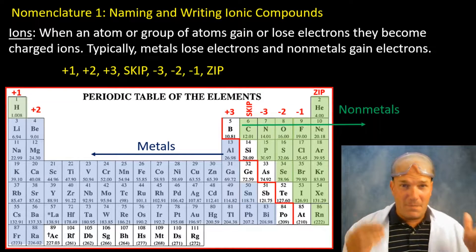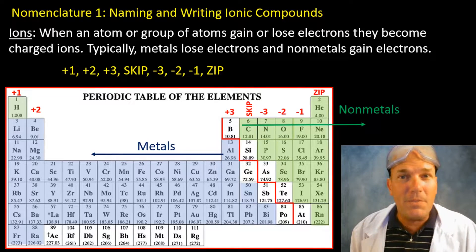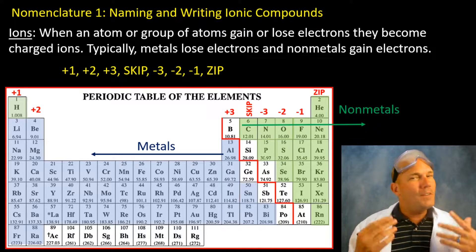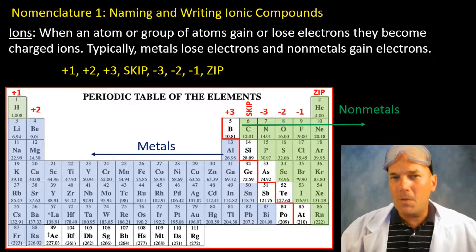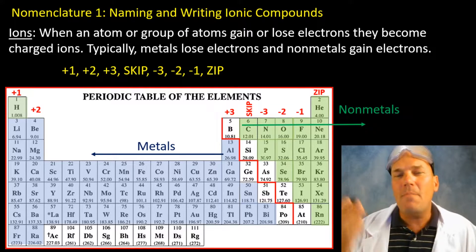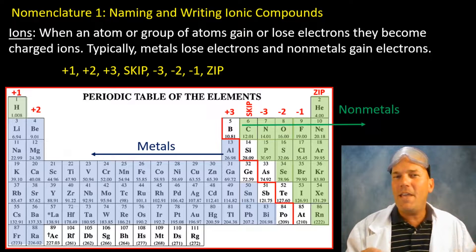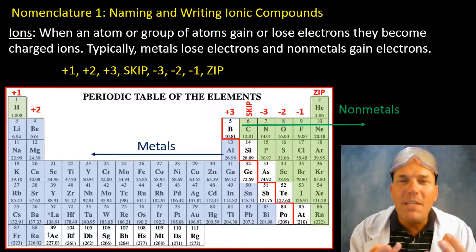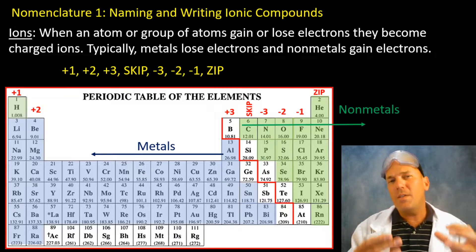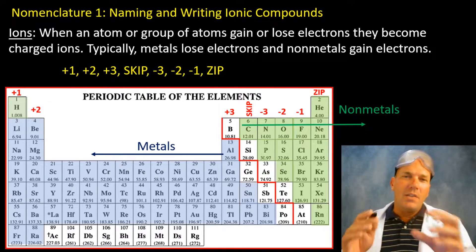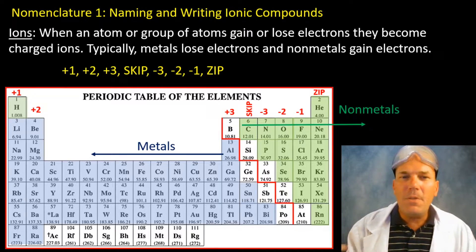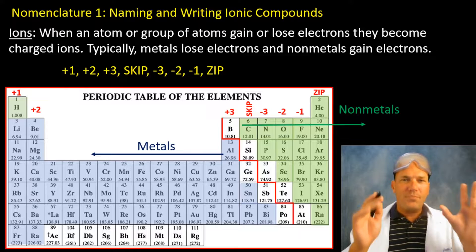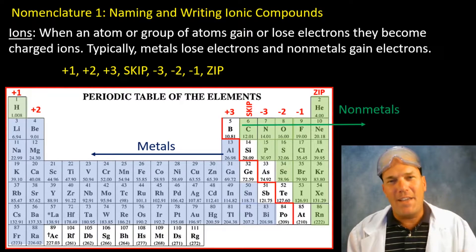Let me explain what that means. Plus one, plus two, plus three — those families will have a positive charge corresponding to their group number. Skip means we're just going to ignore the carbon family for now. Then we go minus three, minus two, minus one, and zip. I'm asking you to number your periodic table and remember this chant so you can readily recall the charges of these families when naming ionic compounds.